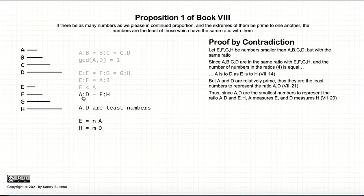According to Proposition 20 of Book 7, if we have two ratios that are equal, A to D is equal to E to H, and A and D are the least numbers of that ratio, then A measures E and D measures H. In other words, E is some multiple of A and H is some multiple of D.